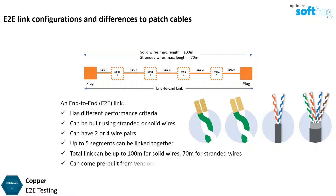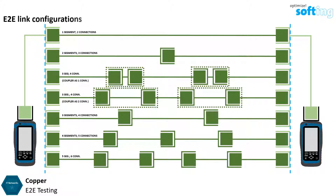An end-to-end link can come pre-built from vendors, or can be assembled in the field using field terminated plugs or sockets. Some end-to-end link configurations can contain segments with plugs or sockets at the cable ends. An end-to-end link can comprise up to 5 segments and 6 connections.